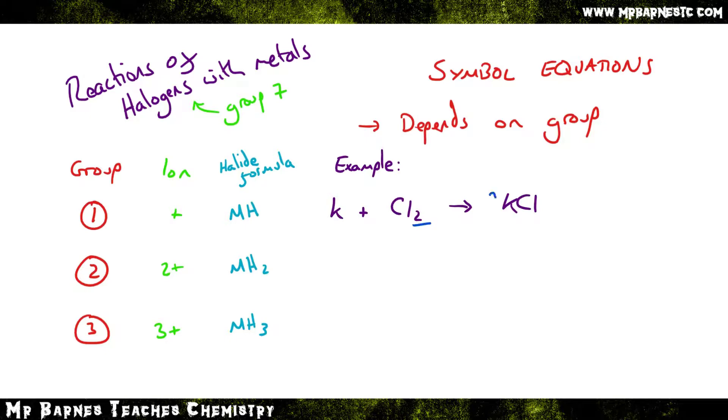The next thing you need to do is balance it. Now you can see here I've got 2 chlorines. Therefore, on the right, I need to put a 2 in front of my KCl. If I do that, it gives me 2 potassiums, so I need to put a 2 in front of my K on the left-hand side, which gives me 2 of each, and it's balanced.